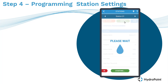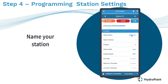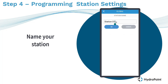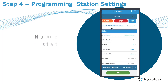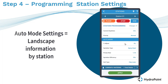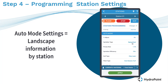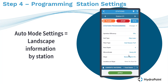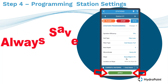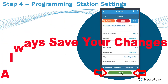Once irrigation is running out in the field, name the station by clicking on the station name field, filling out a name, and hitting OK. Name the station in a way that will help any future users find it running — many people use cardinal directions or landmarks. Then scroll down to the auto mode settings for that station. This is where you enter station-specific settings: the sprinkler type, plant type, soil type, sun exposure, and slope for each station, which the auto mode uses to create the ET-based schedule. Remember to apply any changes so they're saved into the program.